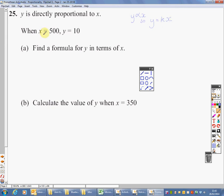It says, when X equals 500, Y equals 10. Find a formula for Y in terms of X. So that means we've got to get a Y equals. Well, we know Y equals some number K times X. Can we find out what that number K is? Well, we've been given two bits of information, the 500 and the 10. So Y is going to be equal to K times X, but we know Y equals 10 and X equals 500.